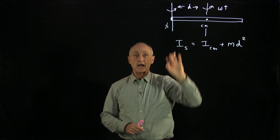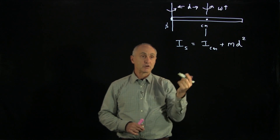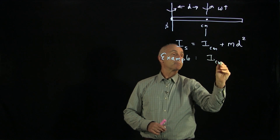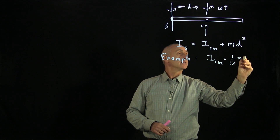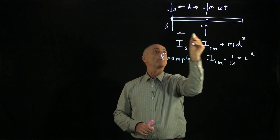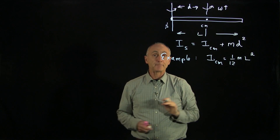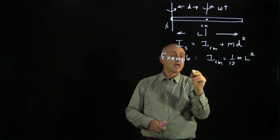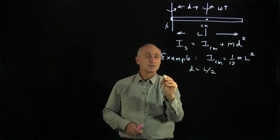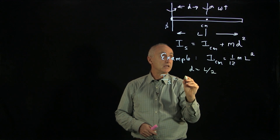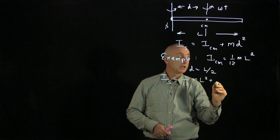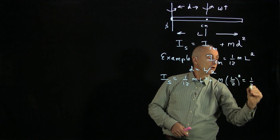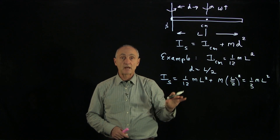This is a very useful result when calculating moments of inertia. We could calculate the moment about any axis we wanted. For example, we know that for a rod of length L, the moment of inertia through the center of mass is (1/12) m L². Let's assume it's a uniform object and calculate the moment of inertia through an axis through the end. In this case, d is equal to L/2. So I about the end axis is (1/12) m L² plus m times (L/2) squared.